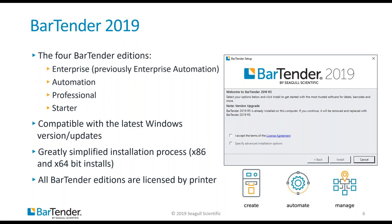Bartender 2019 is available in four editions: Enterprise, Automation, Professional, and Starter. The Enterprise edition is focused on document management and centralized printing across an entire organization. Automation edition provides all the different automation options, including the ability to combine forms, actions, and all our different system integrations. Professional edition is primarily focused on connecting label designs to external databases and selecting or inputting data at print time through a configurable data entry form. Our new Starter edition is our entry-level offering for small businesses for simple label creation and printing.